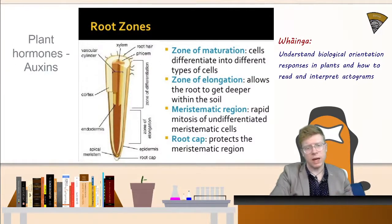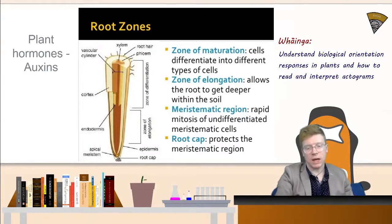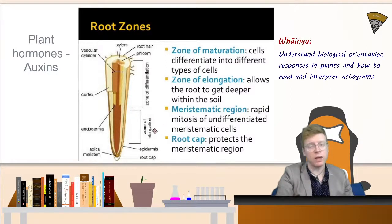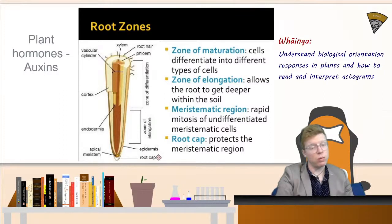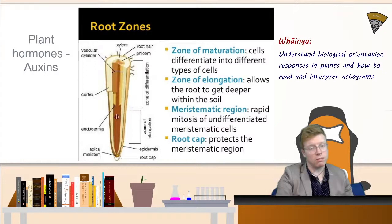Auxins are a large group of plant hormones produced primarily in the tips of shoots and stems, also in roots, and they promote elongation and differentiation of cells. The key auxin is indoleacetic acid, or IAA. In roots, auxins are produced in the meristematic region — the apical meristem — protected by the root cap. These hormones travel down and control elongation and differentiation, and if there's more elongation on one side than the other, the root turns towards the stimulus.